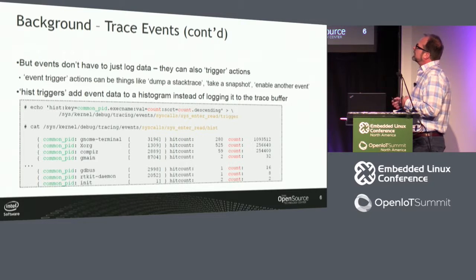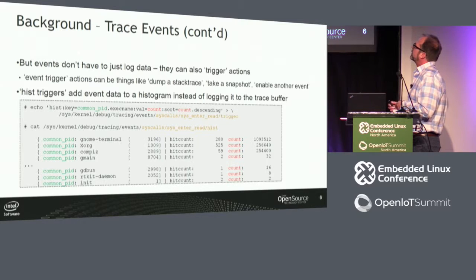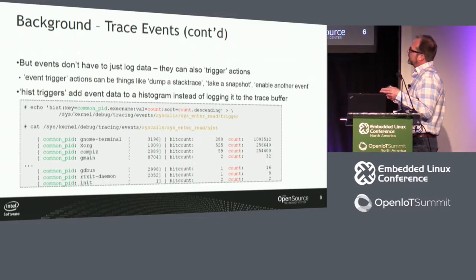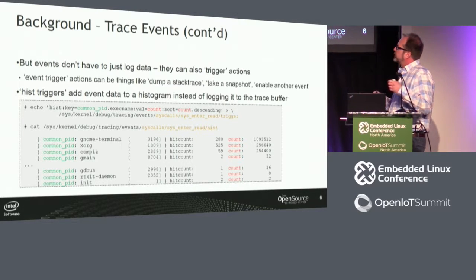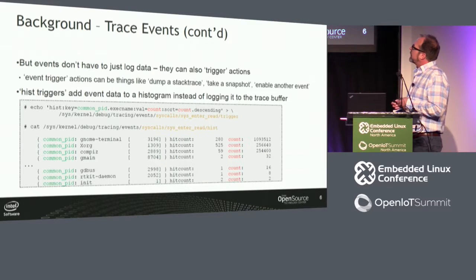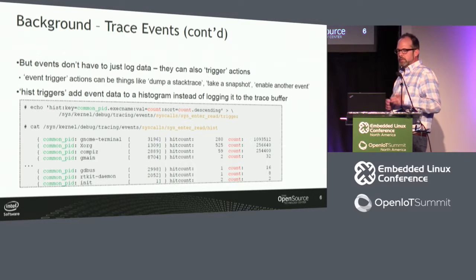For the purposes of this talk, we're mainly interested in the histtrigger action. Histtrigger — hist stands for histogram — basically sends the event to the trace buffer, but it also goes to a user-defined hash table. The user defines the hash table using the fields in the format file. It's essentially a way of consolidating or aggregating all that data from the event into a table.